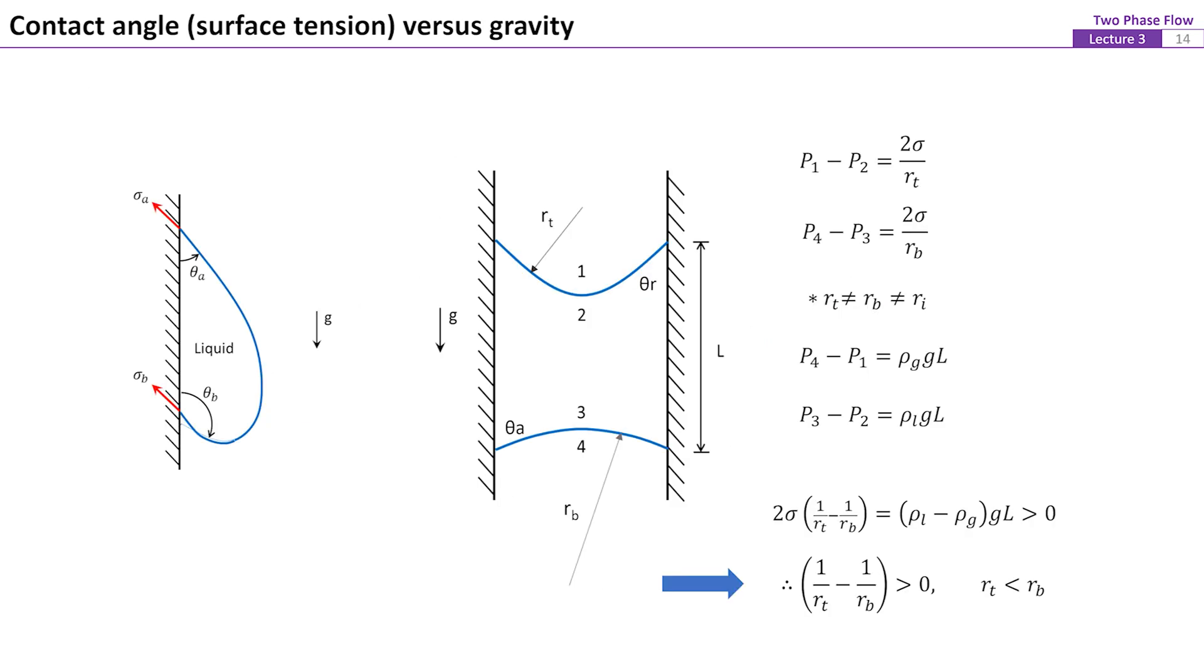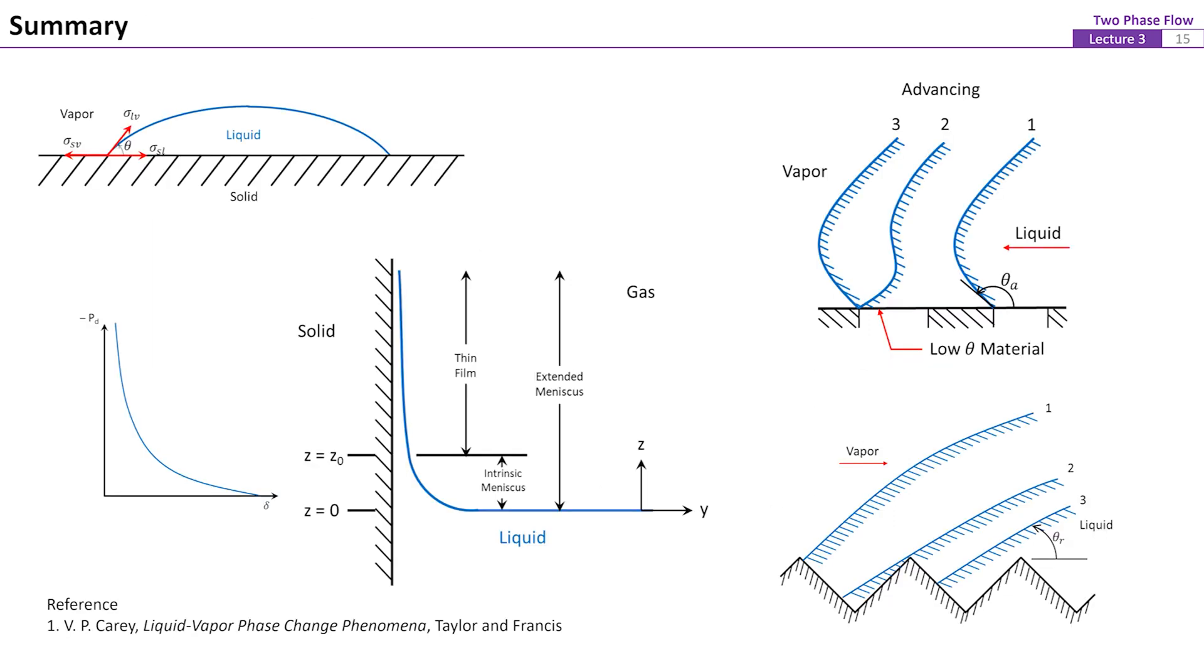From force balance between the surface tension and the gravity, the contact angles and the curvatures of a liquid droplet on a vertical or inclined surface and a liquid column inside a small tube can be estimated. Let's summarize this lecture.